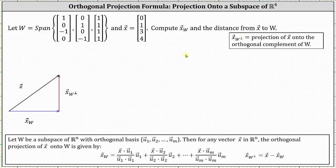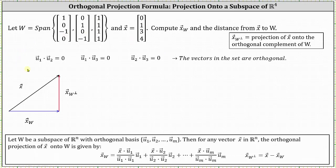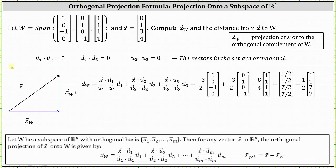Let's begin by verifying the three vectors in the set are orthogonal by taking the dot products. The dot products are equal to 0, and therefore the vectors in the set are orthogonal. Therefore we can use the formula to determine the orthogonal projection of vector x onto W.